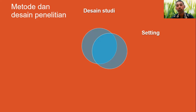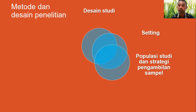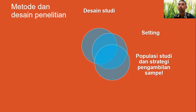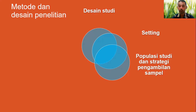Ada beberapa penelitian, misalnya dalam penelitian kuantitatif ada populasi studi dan pengambilan sampel. Dalam penelitian kualitatif ada informan atau beberapa sumber data yang perlu dijelaskan. Walaupun tidak terlalu detail, setidaknya memberi gambaran tentang sumber data dari penelitian itu. Kalau kuantitatif, kita perlu menjelaskan ukuran dari sumber data tersebut.